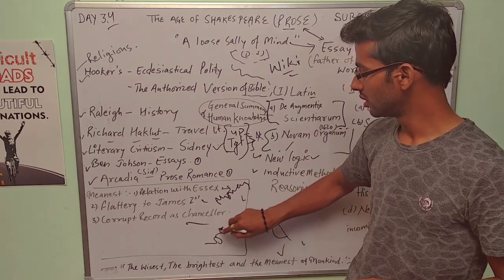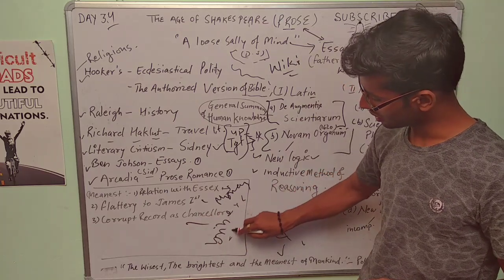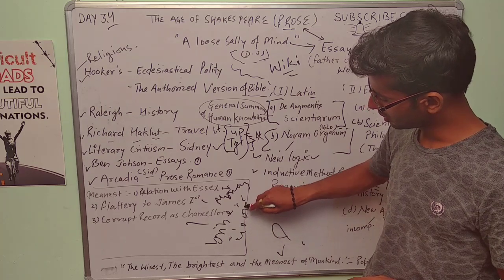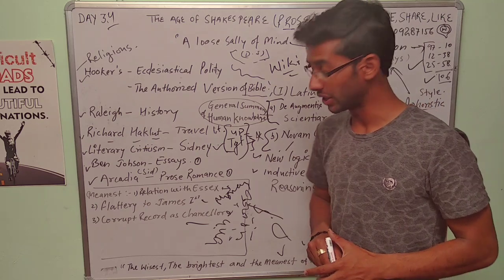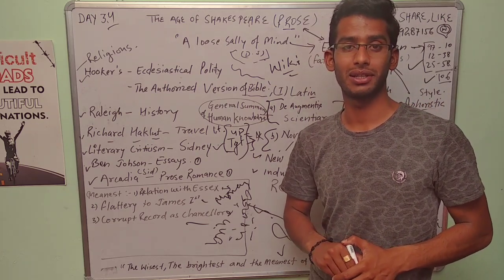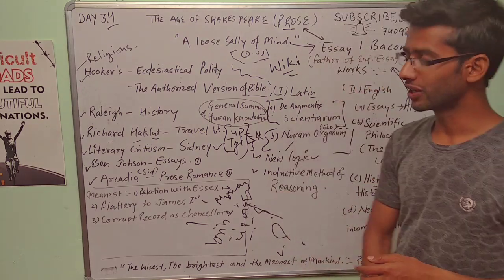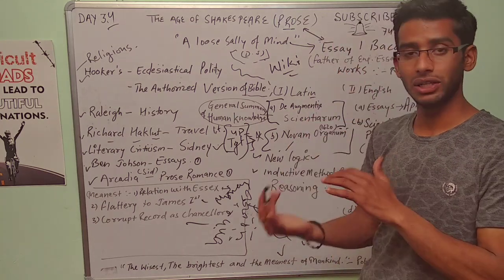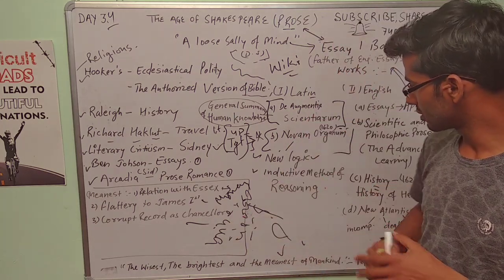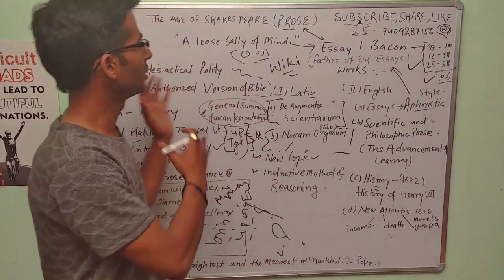Corrupt record as chancellor: he was a chancellor too and he took bribes. That's why he had to give 40,000 something—he had to repay or he got punished for that. So that's why he was meanest.